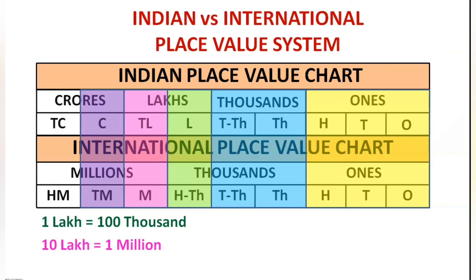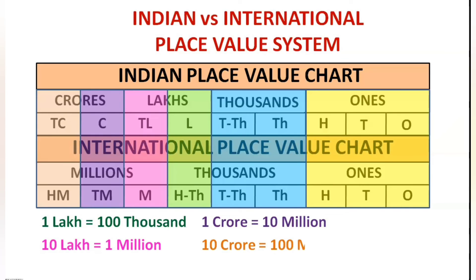The next place in the Indian system is crores, which is the same as 10 millions in the international system, so 1 crore is 10 millions. And the next place is 10 crores in the Indian system, which is the same as 100 millions in the international system — so 10 crores is nothing but 100 millions.